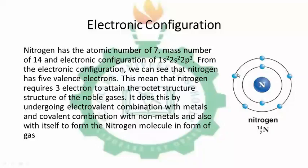When we count the number of valence electrons, we have 1, 2, 3, 4, 5 — nitrogen has 5 valence electrons. Let's confirm this from the electronic configuration: the 2s and the 2p are the orbitals in the outer shell. We have 2 electrons for the 2s and 3 electrons for the 2p. So 2 plus 3 gives us 5, which conforms to this structure for nitrogen.